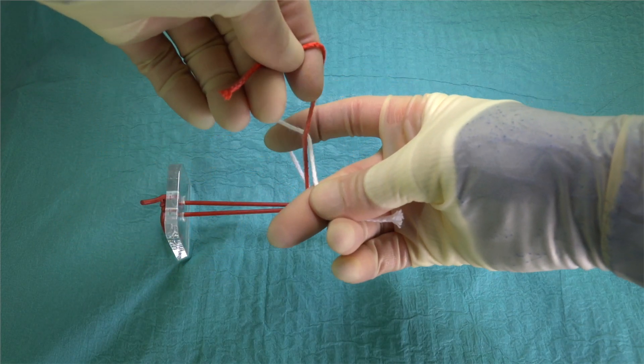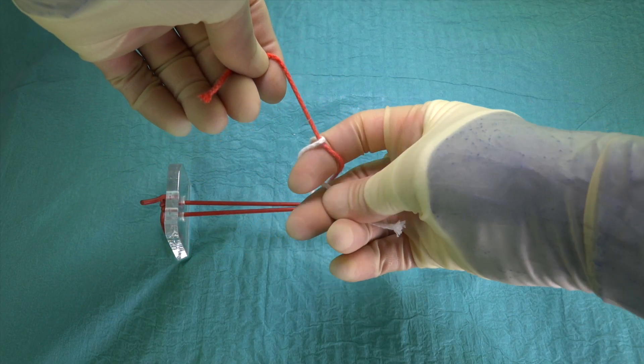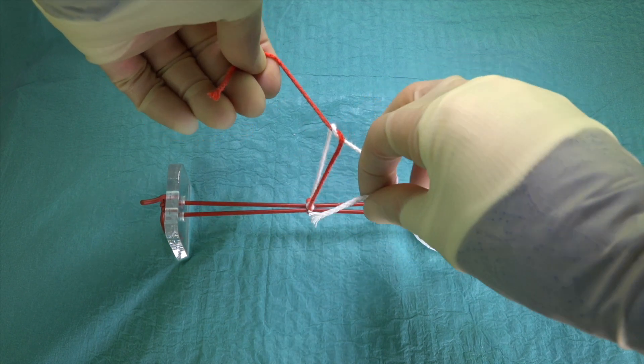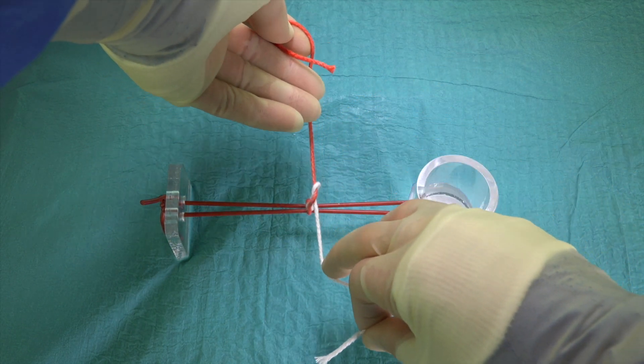We then repeat the actions of the initial throw, remembering to cross the hands after every throw to ensure that the knot lays flat and locks in place.